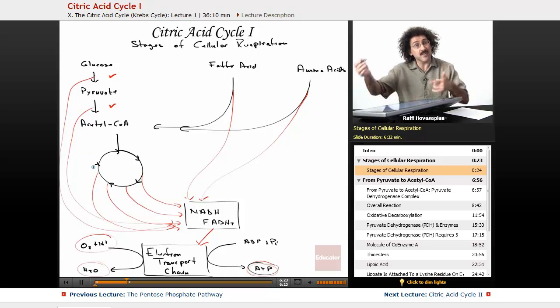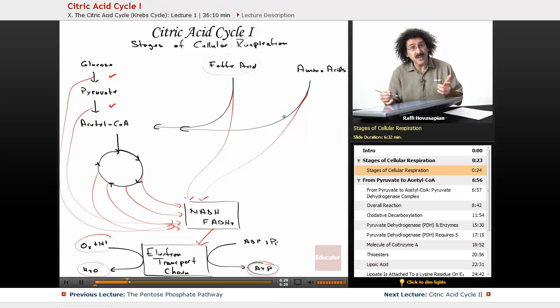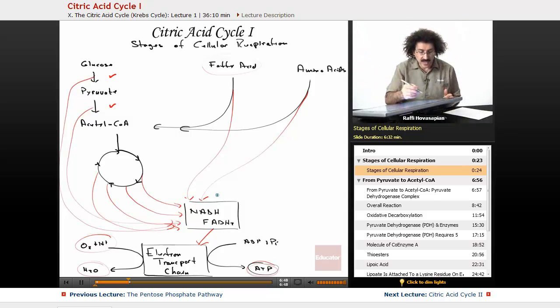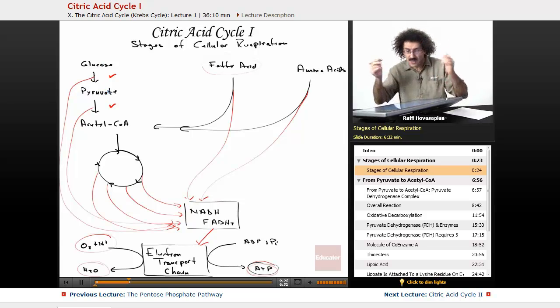Later on, in subsequent lessons, we're going to discuss the breakdown of fatty acids and amino acids. We'll have covered this part. Then when we get to oxidative phosphorylation, we'll discuss the transfer of electrons onto the electron transport chain. Then we'll have completed our basic catabolic movement. So again, we did glucose to pyruvate. Today, we're going to do pyruvate to acetyl-CoA. Let's get started.